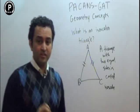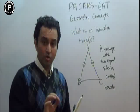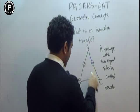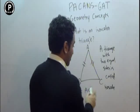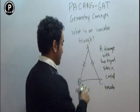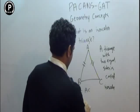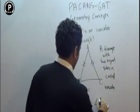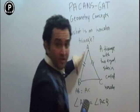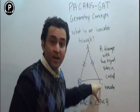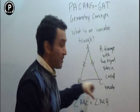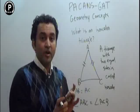If two sides are equal — side AB and side AC — then the opposite angles will also be equal. This means angle ABC is going to be equal to angle ACB. Side AB has the opposite angle ACB, and side AC has the opposite angle ABC. So these two angles are going to be equal.